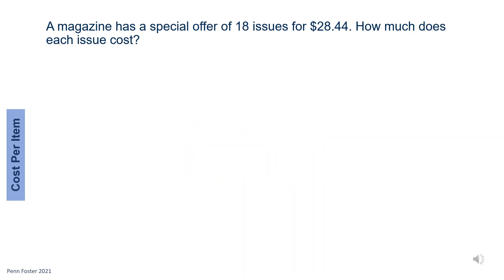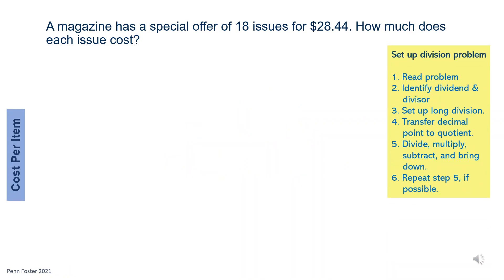When it comes to word problems, one key step is to carefully read the question and understand what's asking. Let's read this problem. A magazine has a special offer of 18 issues for $28.44. How much does each issue cost?